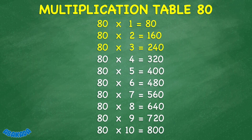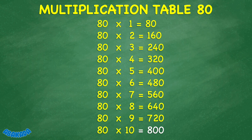80 times 4 equals 320. 80 times 5 equals 400. 80 times 6 equals 480. 80 times 7 equals 560. 80 times 8 equals 640. 80 times 9 equals 720. 80 times 10 equals 800.